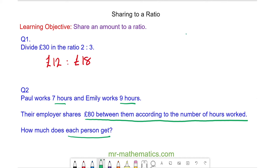Well, we have the amount of £80 and we're sharing it in the ratio of the hours worked, which is seven to nine. So the total number of hours worked is 16 hours.